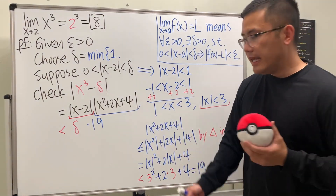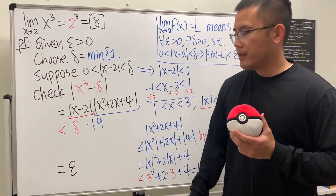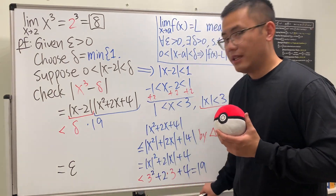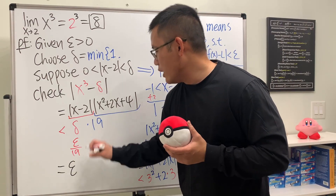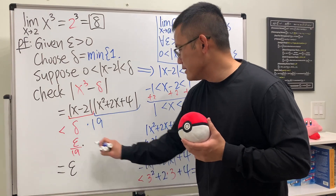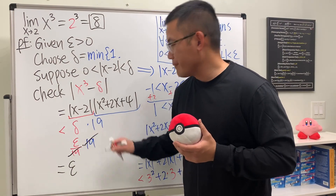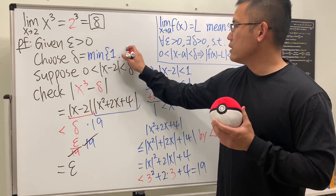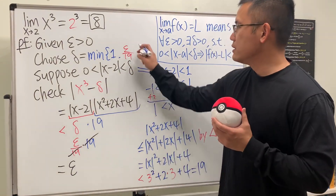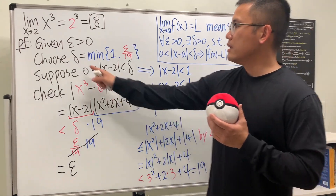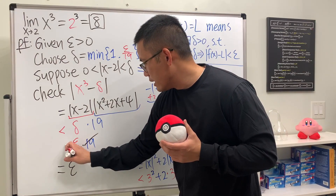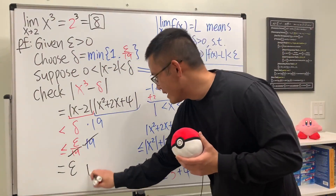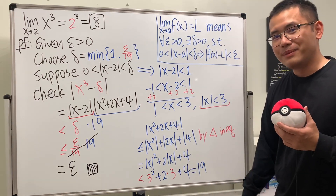In the end we have to get epsilon, so we choose delta to be the minimum of 1 and epsilon over 19. That way, when we multiply by 19, they cancel out nicely. We also need epsilon over 19 written here, and we close the brace with less than or equal to epsilon. That completes the first example.